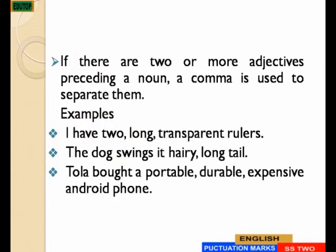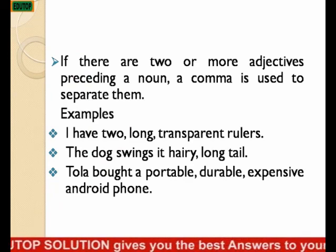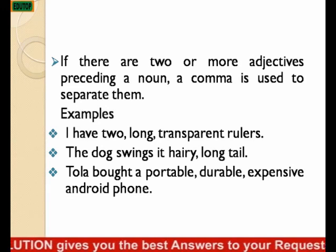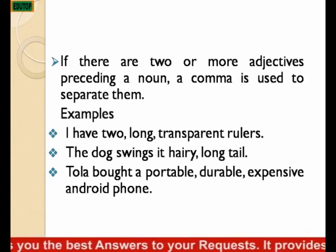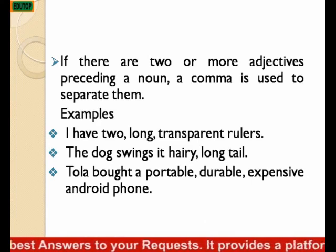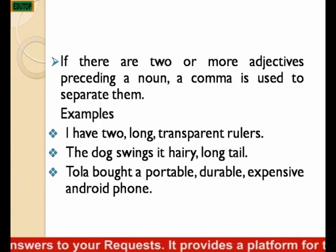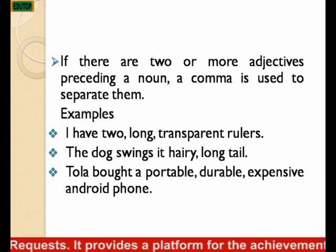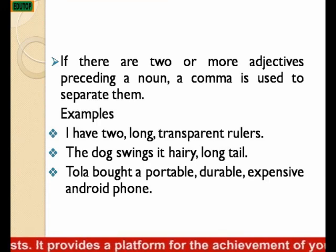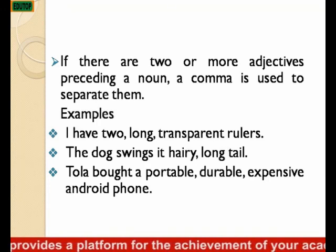If there are two or more adjectives preceding a noun, a comma is used to separate them. So if we have more than two adjectives preceding a noun, commas will be used to separate the adjectives. Example: I have two, long, transparent rollers. The adjectives in the sentence are 'two,' 'long,' and 'transparent,' so we use commas to separate them.